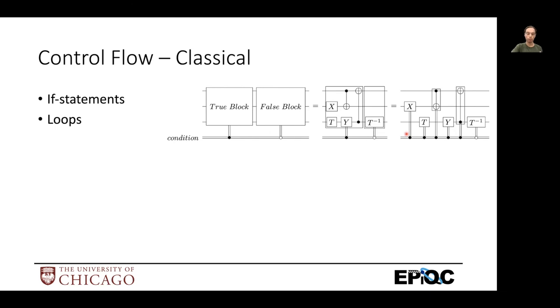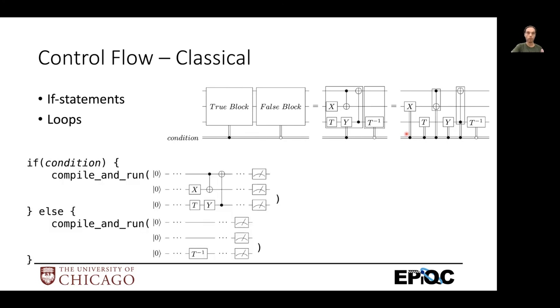So a simpler way of doing it is to just compile two different versions of the program. So if we know this condition before we need to run the circuit, we can actually check the condition and then compile two different circuits depending on the condition. So if the condition is true, we'll substitute in the true block and compile the whole circuit and run it. If it's false, we'll substitute in the false block, compile the circuit and run it.